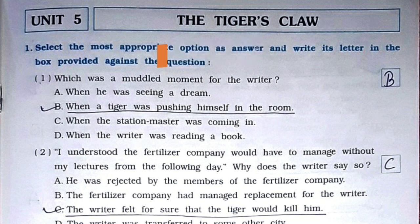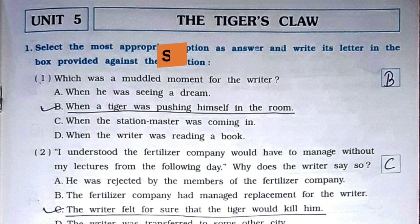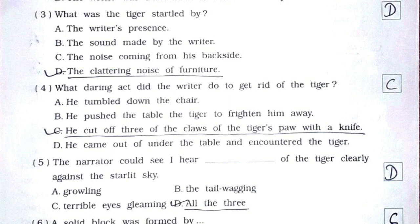MCQ 1: Which was a muddled moment for the writer? Its option is: when a tiger was pushing himself in the room. MCQ 2: 'I understood the fertilizer company would have to manage without my lectures from the following day' — why does the writer say so? Its option C: the writer felt for sure that the tiger would kill him. MCQ 3: What was the tiger startled by? Option D: the clattering noise of furniture. MCQ 4: What daring act did the writer do to get rid of the tiger? Option C: he cut off three of the claws of the tiger's paw with a knife.